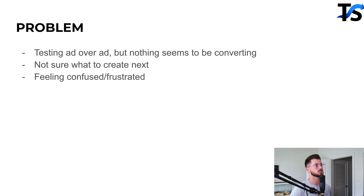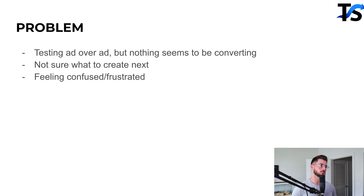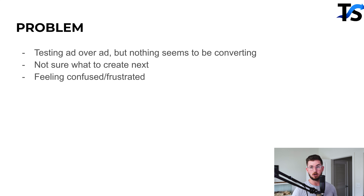I have three key things that are going to allow you to take a subpar ad — say it's getting a 1.3–1.5x ROAS when your goal is 2.5x — and make it more efficient and more powerful. That's what we're going to focus on.